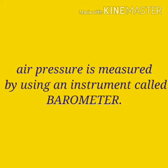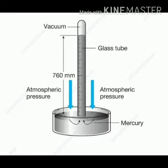It is measured in inches or centimeters. It consists of an upside-down glass tube placed in liquid mercury, as you can see in the image. As air pressure increases, mercury rises in the upside-down tube. When pressure decreases, the mercury drops. So the height of mercury in the upside-down tube is the measure of air pressure.